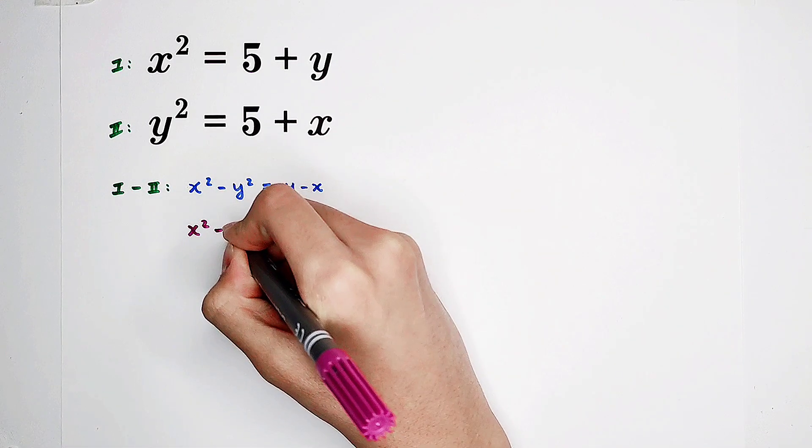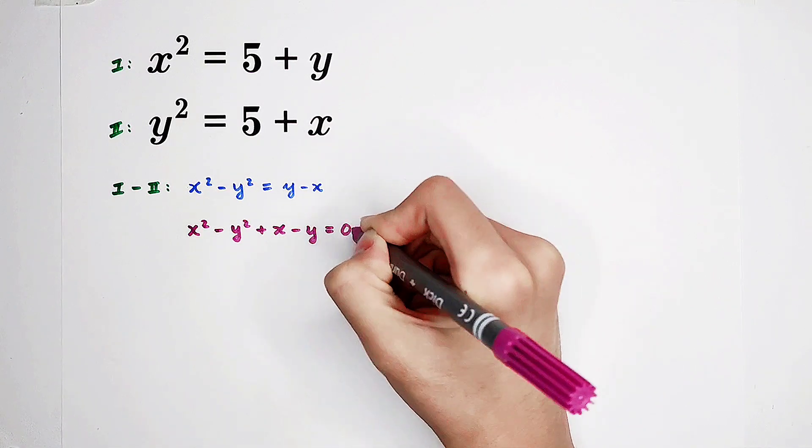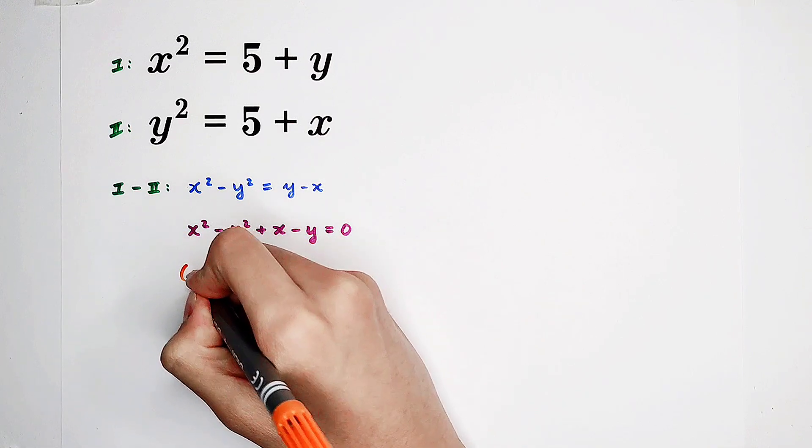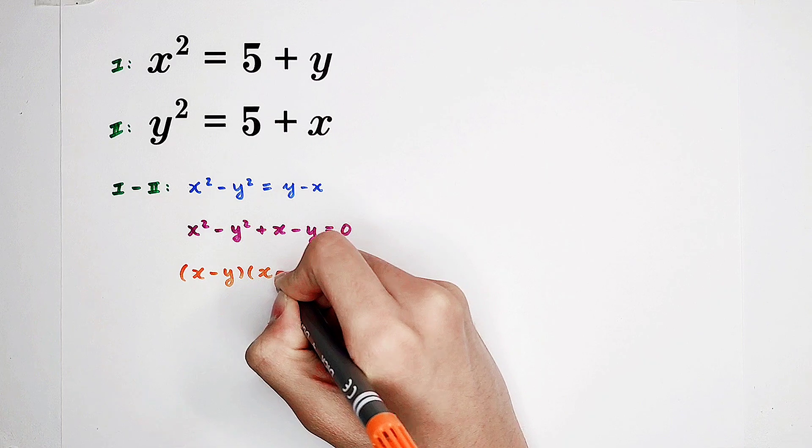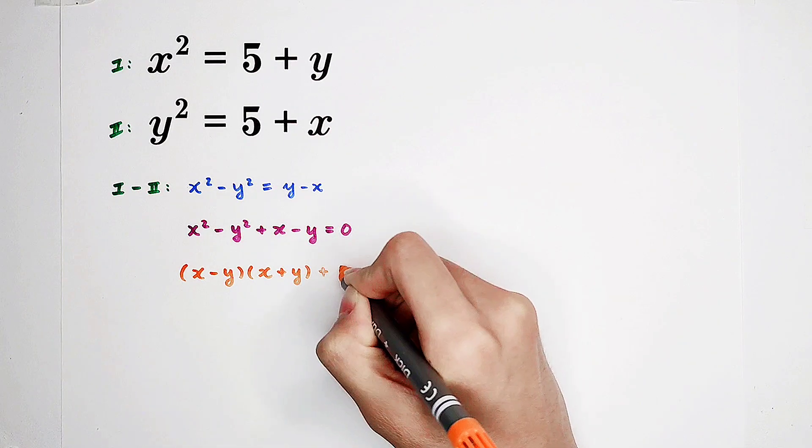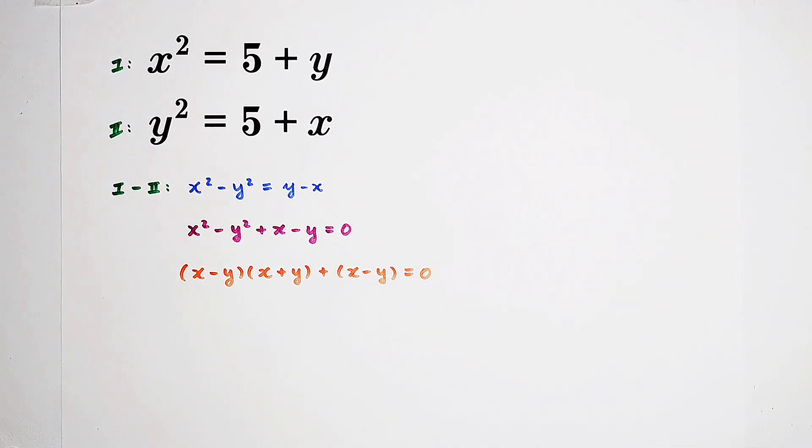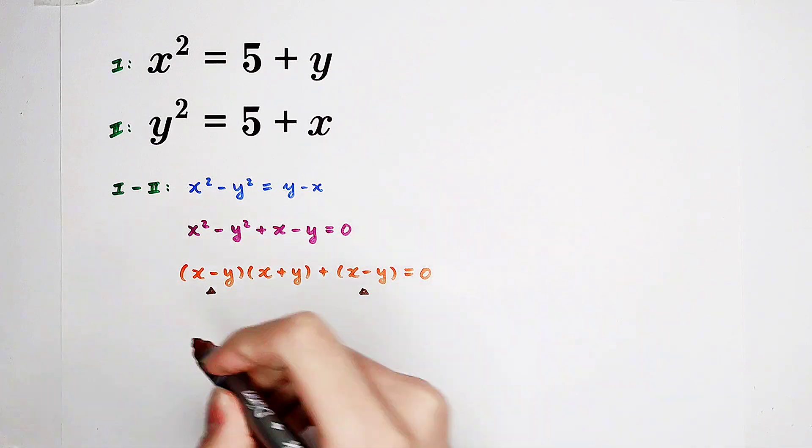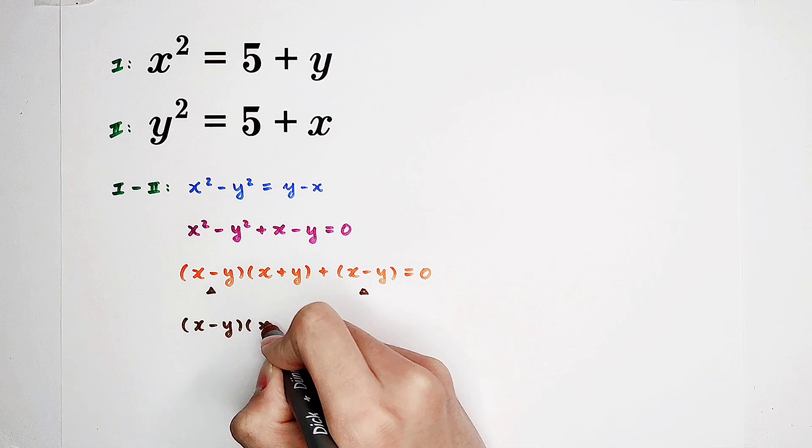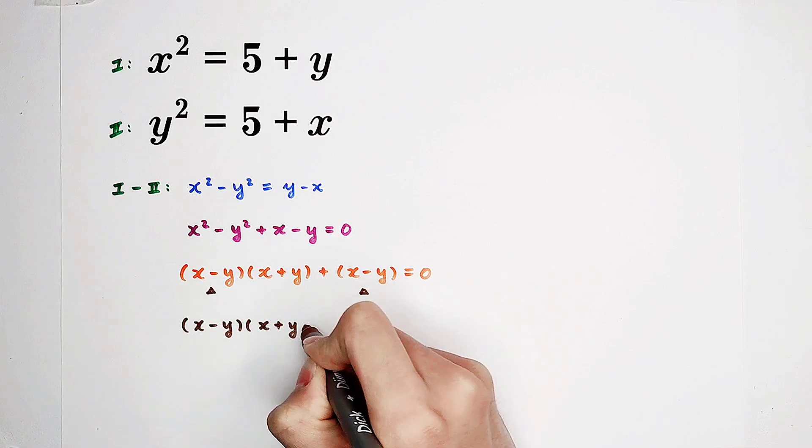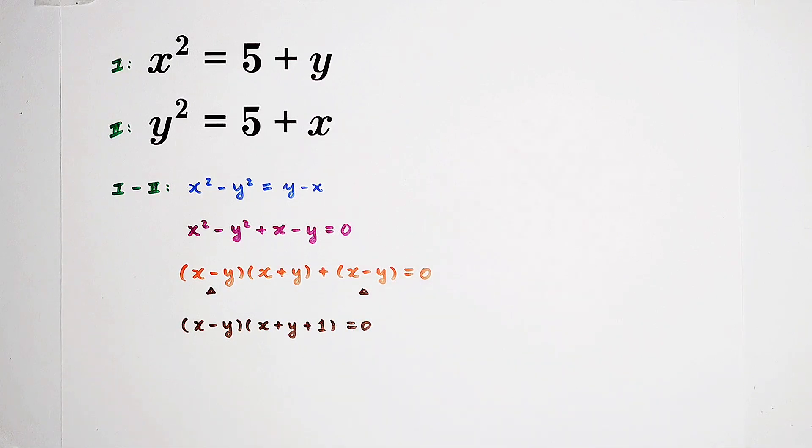Bring everything to the left-hand side. And now, factorize. It's x minus y times x plus y, then plus x minus y equals 0. So now we can take this out: x minus y times, in the bracket, x plus y plus 1.